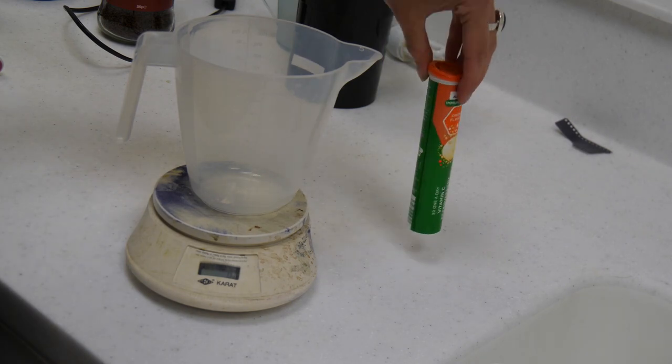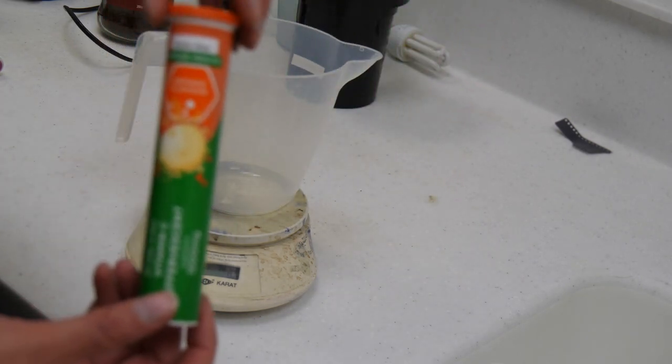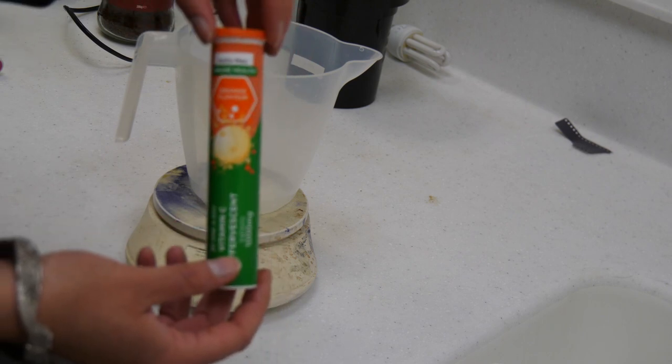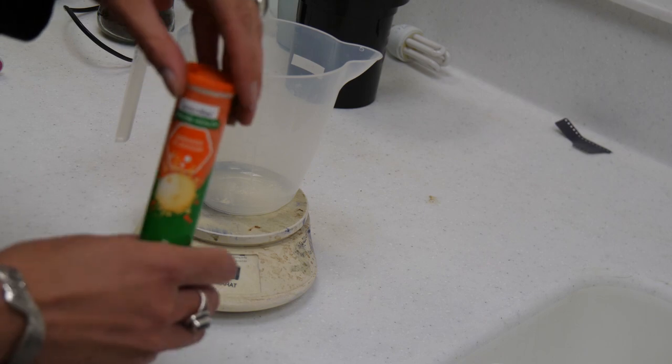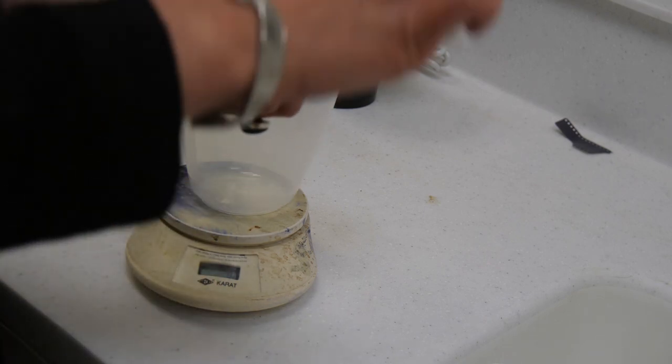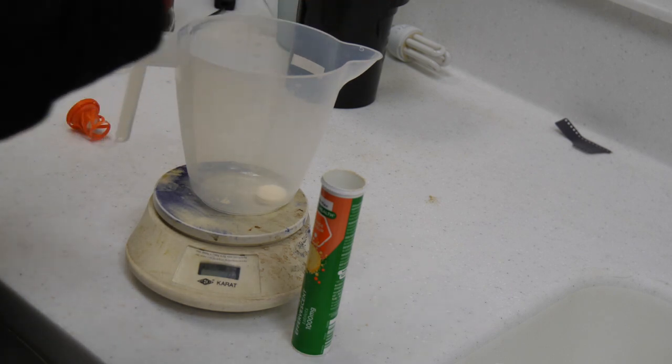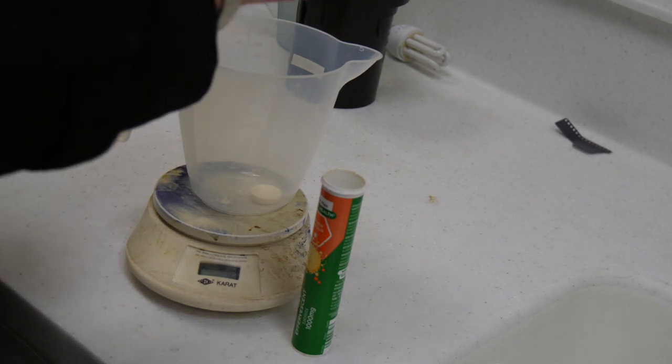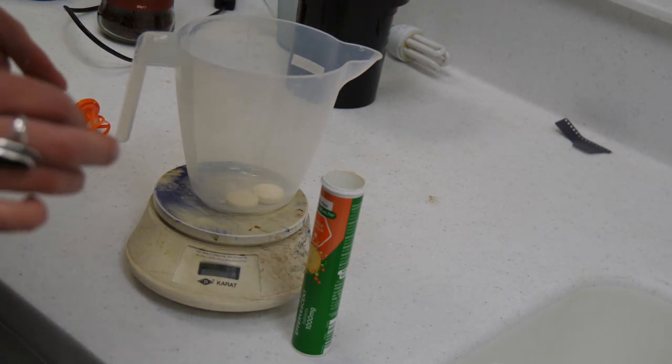So while we're waiting for the soda crystals to dissolve, you can measure out your vitamin C. I'm just using these fizzy vitamin C tablets. And we want 9.6 grams of these for the medium format film. And these are about 4 grams each, so I'll do one, which is 4 grams. That's actually come out as 8.